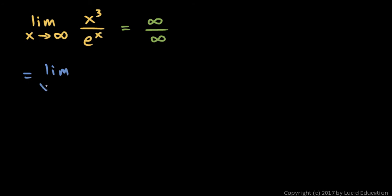This should equal the limit as x approaches infinity of the derivative of the numerator, which is 3x squared, over the derivative of the denominator, which is e to the x. Again, we still have two functions, one over the other, that get infinitely large. Putting in infinitely large values for x still gives us infinity over infinity.